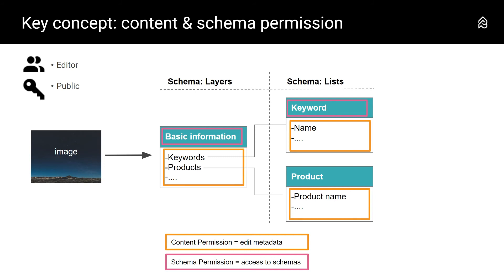A schema stands for a group of fields that can store different types of information — it's a container concept for what you see in the menu list: layers, file types, virtual types, field sets, and relationships. In each one of them you can add fields in which information can be stored. The ones we use the most are lists and layers, and with schema permissions you can define permissions for each one of them. In simple terms: content permissions are about editing metadata, while schema permissions manage access to schemas and their fields on a schema-by-schema basis.